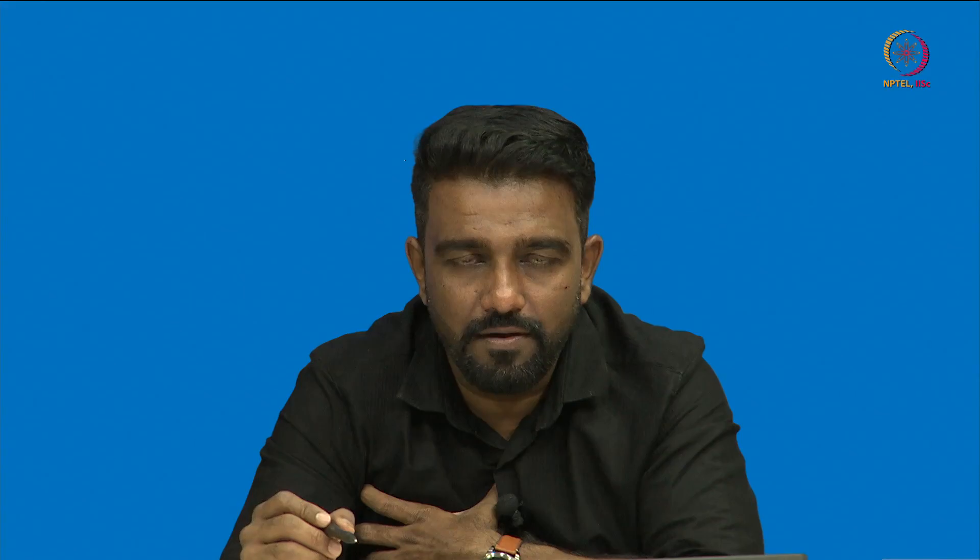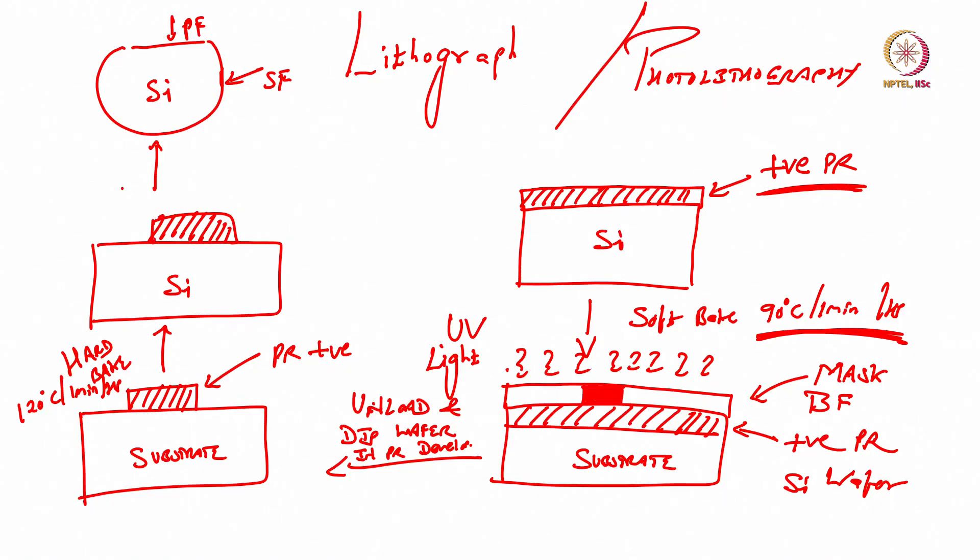With positive photoresist, whatever pattern is on the mask, the same pattern is transferred to your substrate. In the case of negative photoresist, whatever pattern is on the mask, the opposite pattern will appear on the substrate. For positive photoresist with a bright field mask, you get this result.